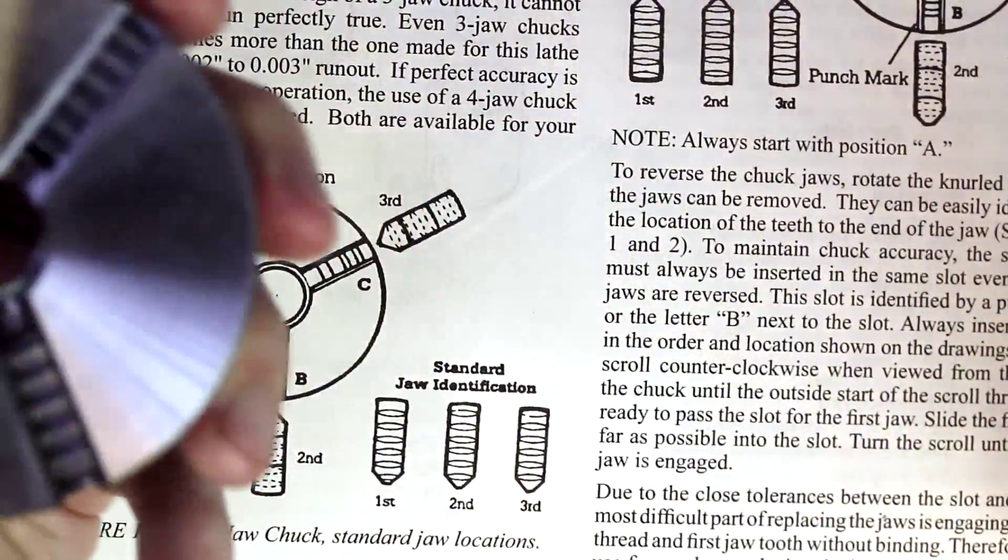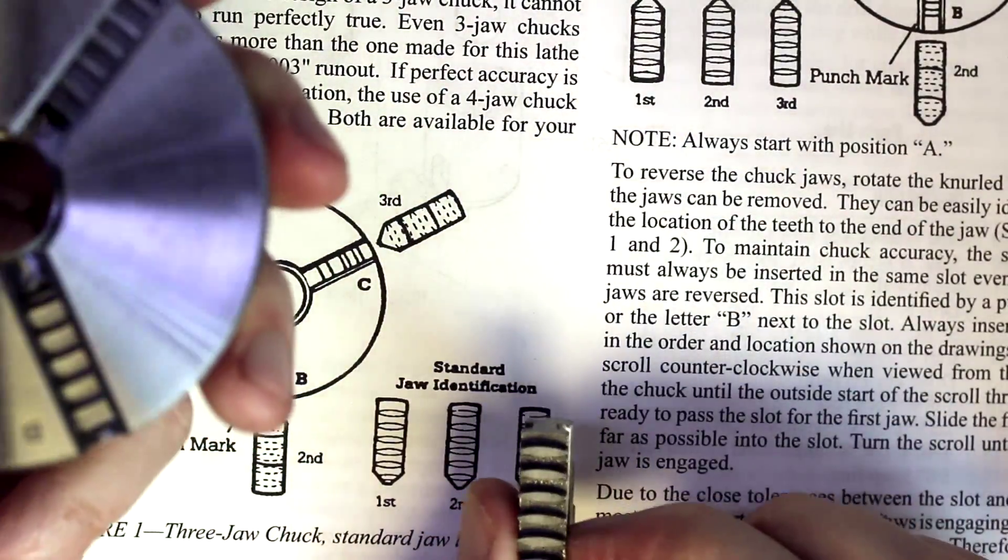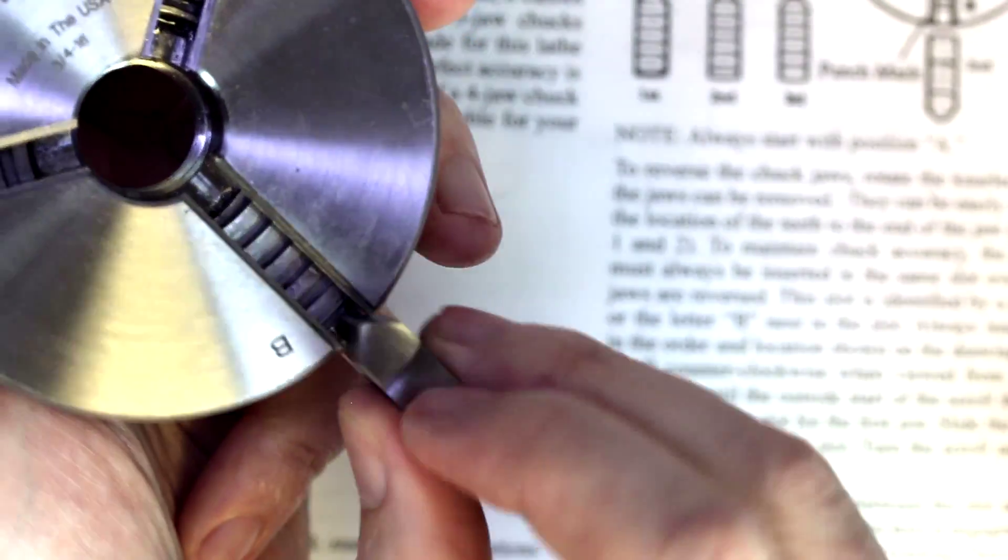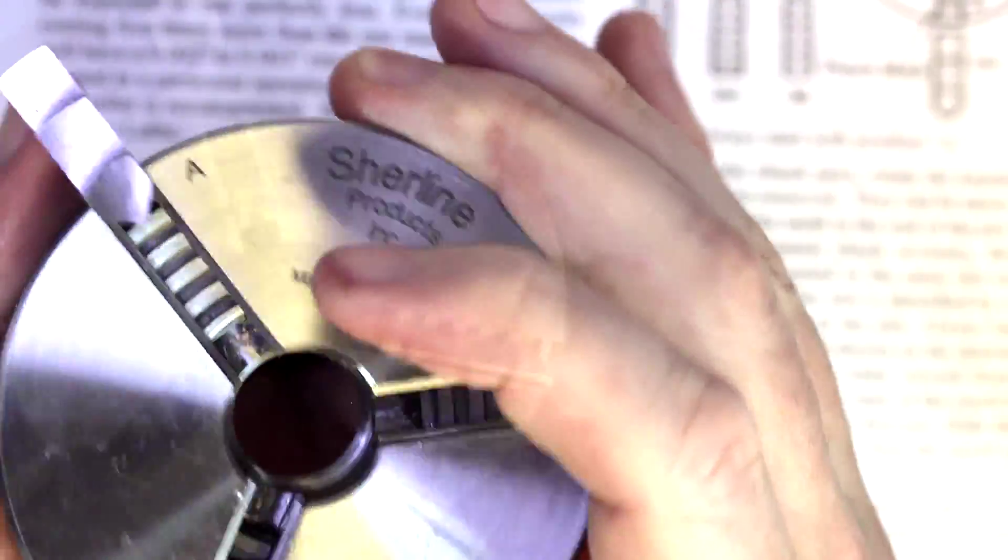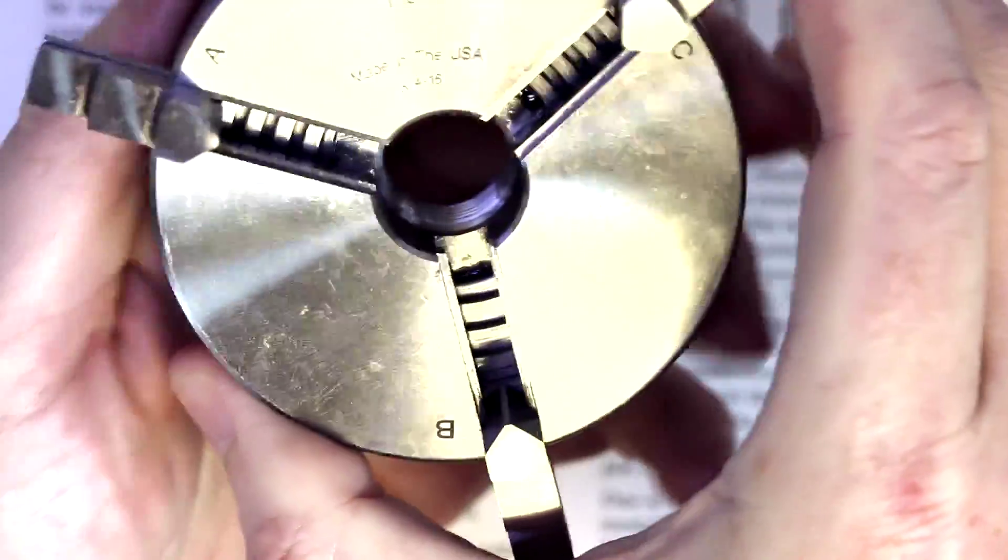And we're going to set the scroll for the next jaw, which again matches up with the picture. That's where the edges are more or less centered from the front and the back. And we want to engage that, which we've got done.